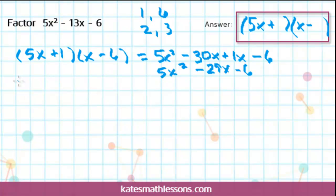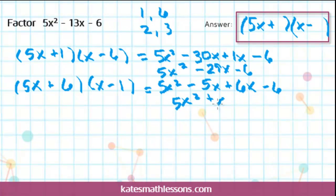We need to try switching them around and see if that fixes anything. So let's try switching them and do a 6 and a minus 1. This time if I do the first, I get 5x squared again. The outsides would give me a minus 5x and the insides would be plus 6x. These combine to a positive 1x, which is not what I wanted. I wanted a negative 13.